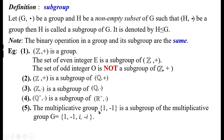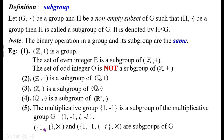The multiplicative group {1, -1} is a subgroup of the multiplicative group G = {1, -1, i, -i}. That is, the algebraic structure ({1, -1}, ·) and the structure ({1, -1, i, -i}, ·) are related as subgroup of G.